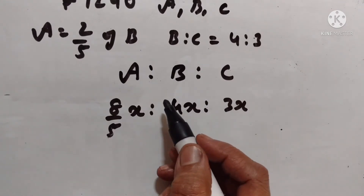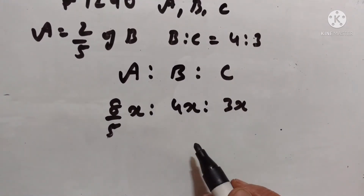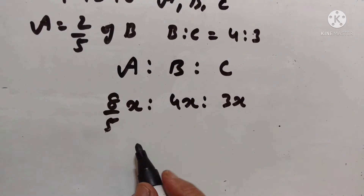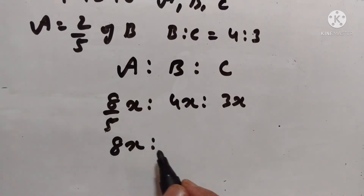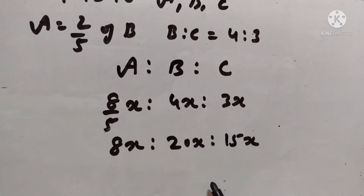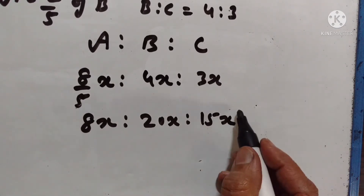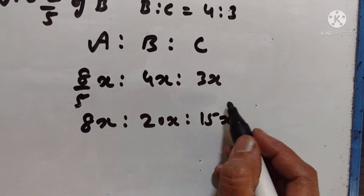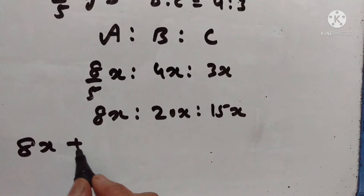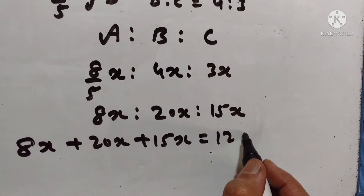The ratio A, B, C get is 8x upon 5 to 4x to 3x. Let us multiply all 3 terms by 5. So this becomes 8x to 20x to 15x. Now rupees 1290 should be divided in this ratio. So 8x plus 20x plus 15x is equal to 1290.